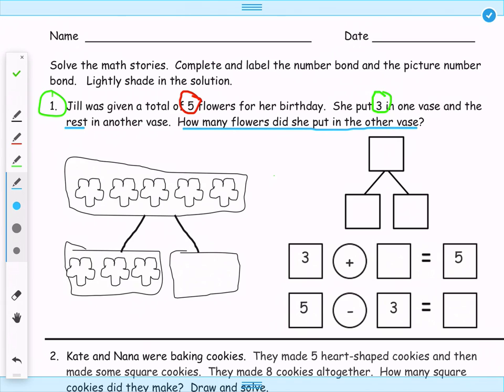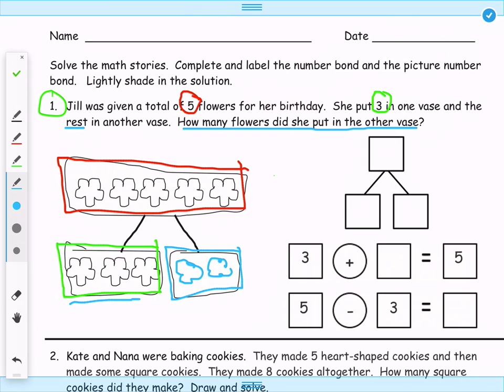So we are trying to find an unknown number, or specifically this number right here. So we know that she started with 5 flowers, so represented right here, and she put 3 of those 5 flowers in a vase and the rest in the other vase. So we're simply going to count on until we find the number 5. So we start with 3, 4, and 5. So our mystery number was 2.